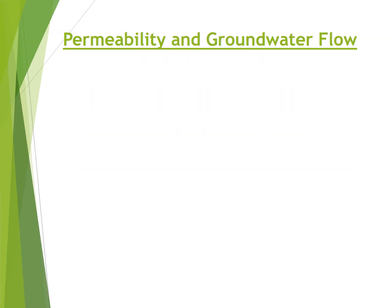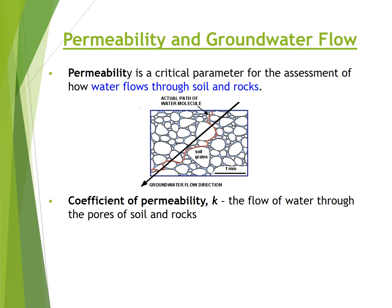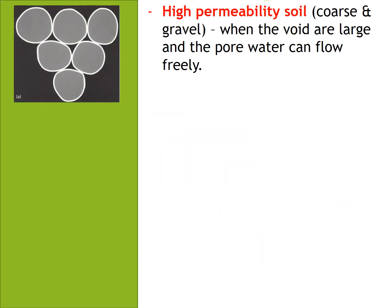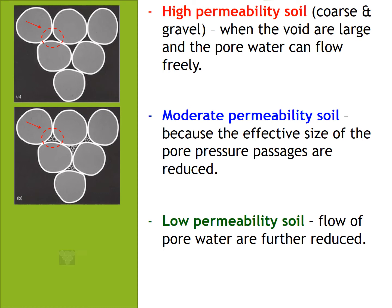Permeability and groundwater flow: Permeability is a critical parameter for the assessment of how water flows through soil and rocks. The coefficient of permeability, k, is the flow of water through the pores of soil and rocks. Soil permeability depends on properties of the soil, including the size and arrangement of the soil particles and the resulting pore spaces formed when the particles are in contact. High permeability soils include coarse soils and gravel, where voids are large and pore water can flow freely. Moderate permeability soils have reduced effective pore passage sizes. Low permeability soils further restrict the flow of pore water.